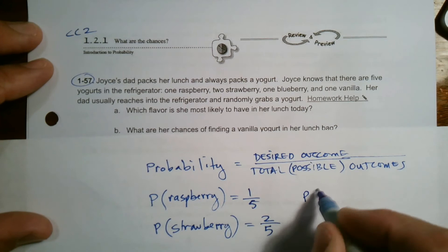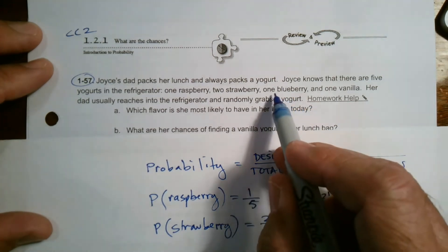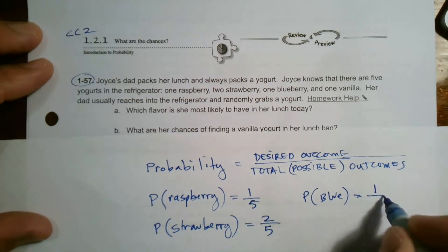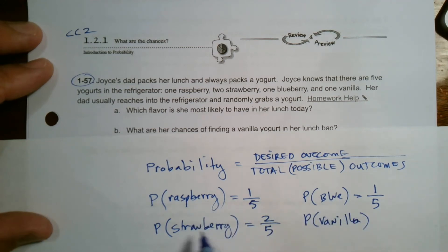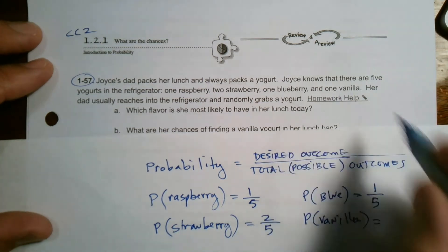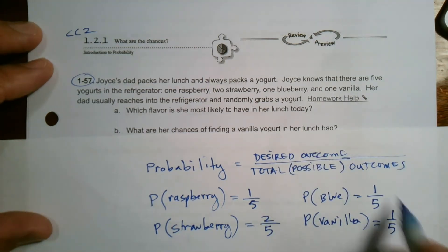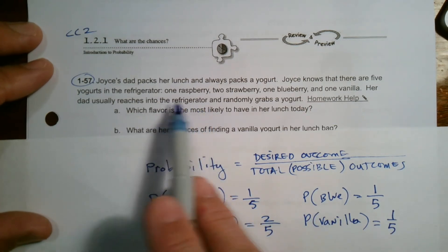Blueberry—there's only one, so it's 1/5. And the probability of vanilla is also 1/5. This is how you notate probability: P with parentheses of what you're finding the probability of. These are the probabilities of each yogurt.